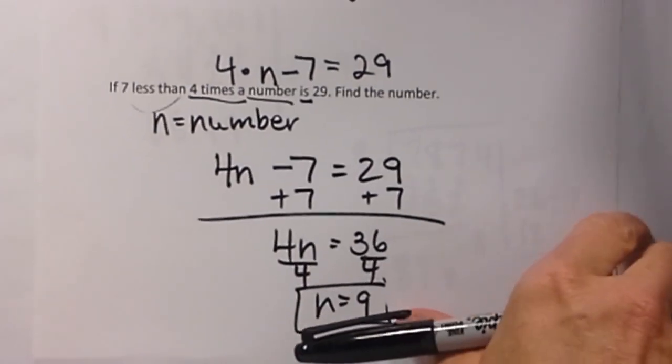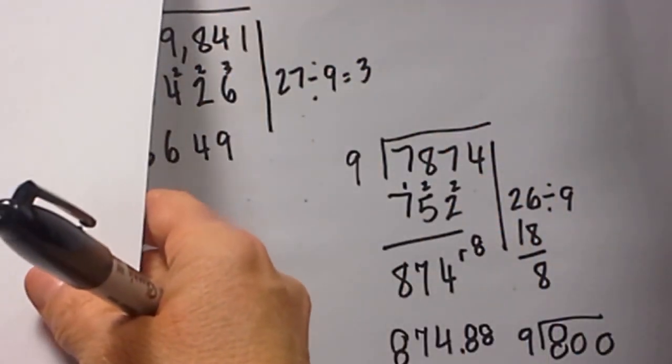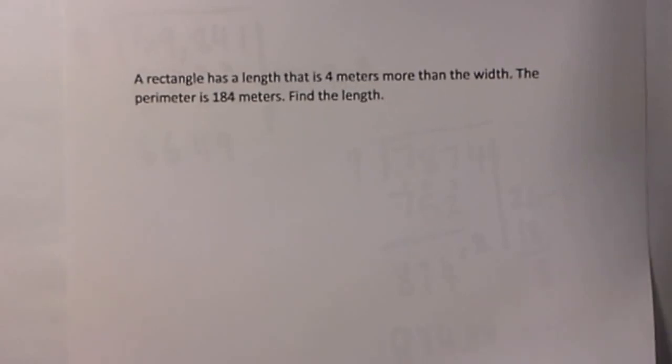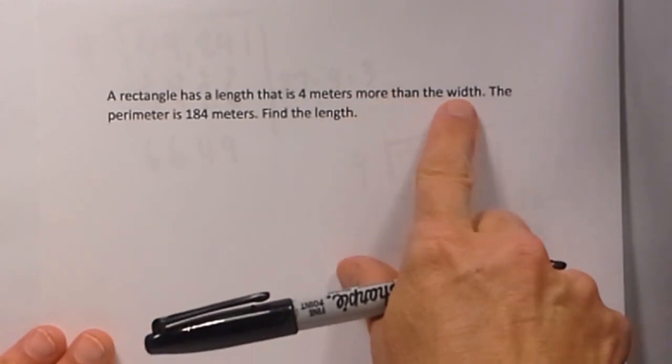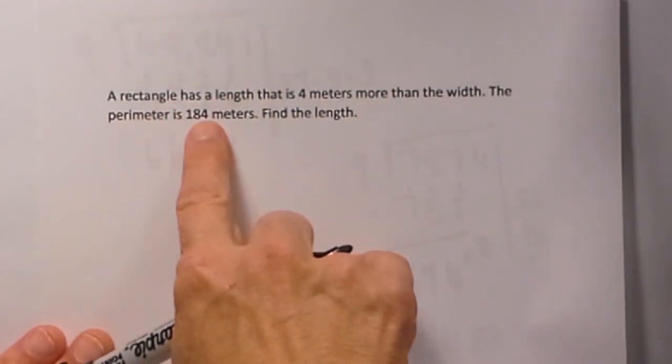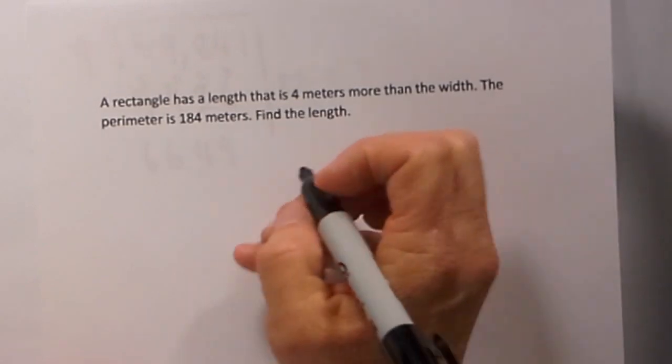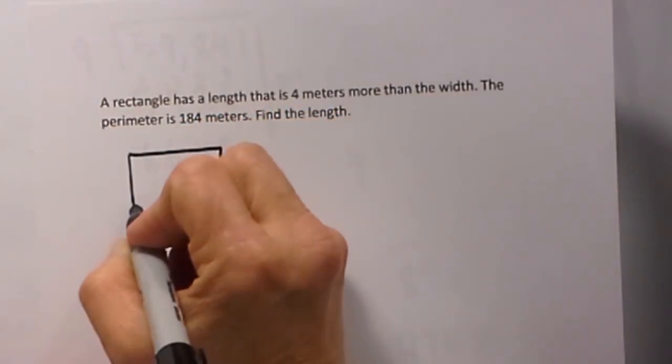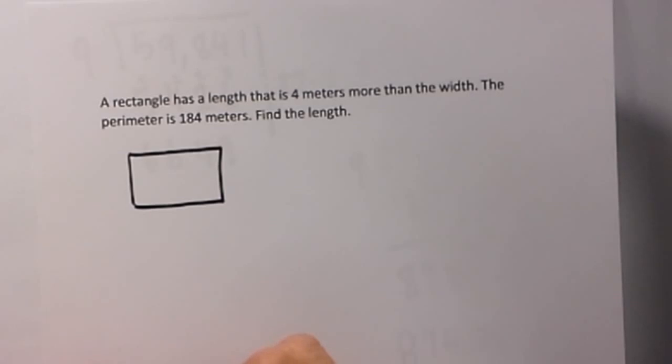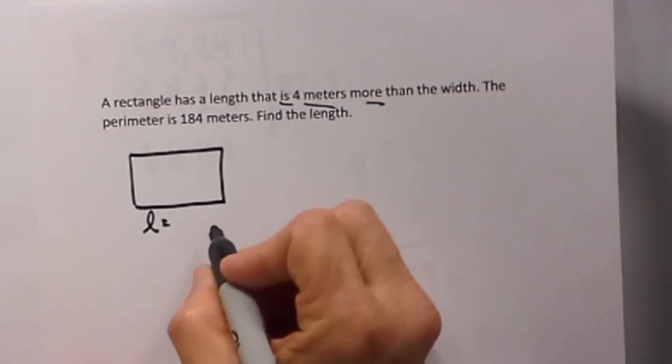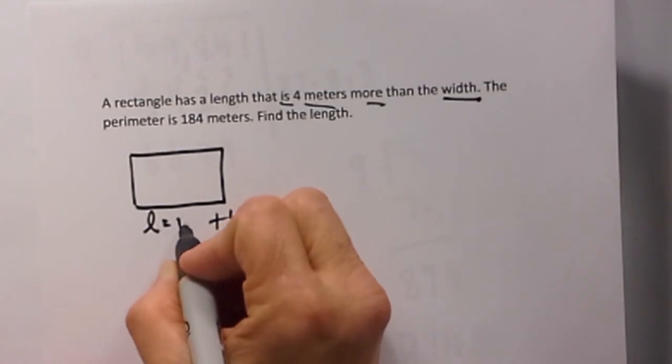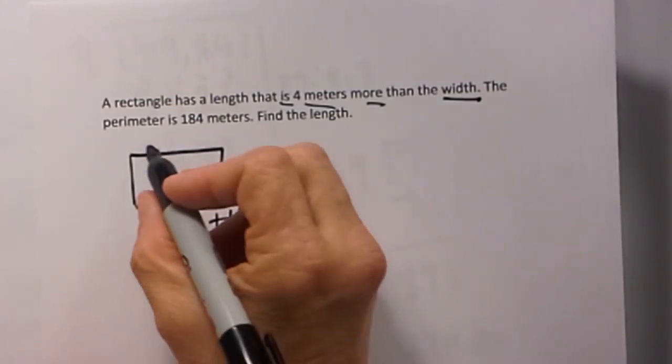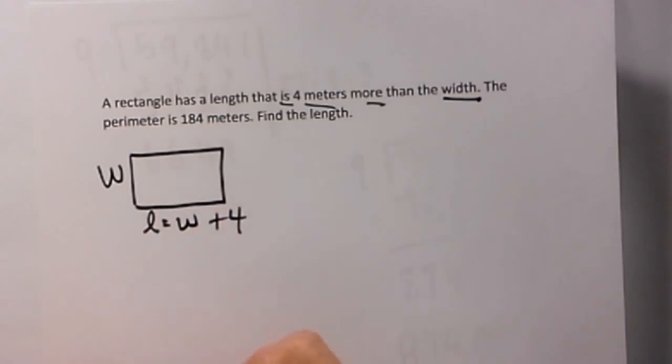Let's throw in another rectangle problem. Here is one. It says a rectangle has a length that is 4 meters more than the width. The perimeter is 148 meters. Find the length. So let's draw our picture. We have a rectangle. The length which is this longer side is 4 more. So we are going to add 4 to something. What are we adding 4 to? We are adding 4 to the width. So it is just w plus 4. That means this side over here must be w.